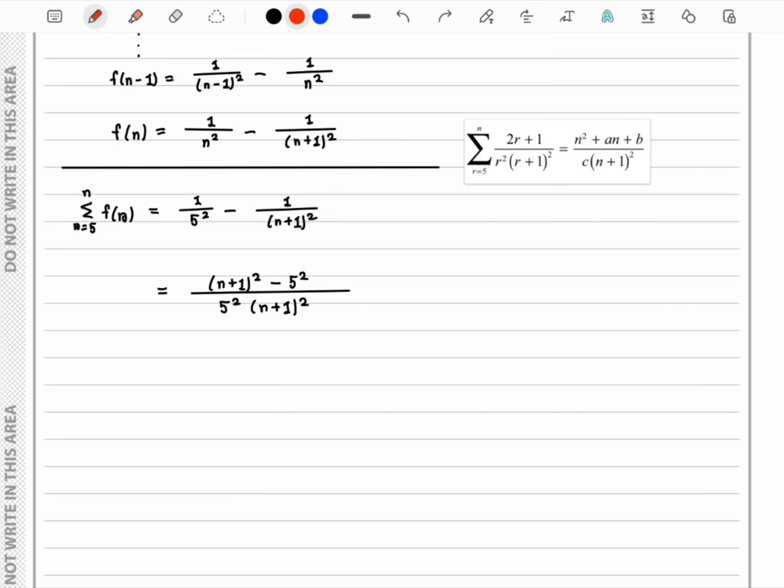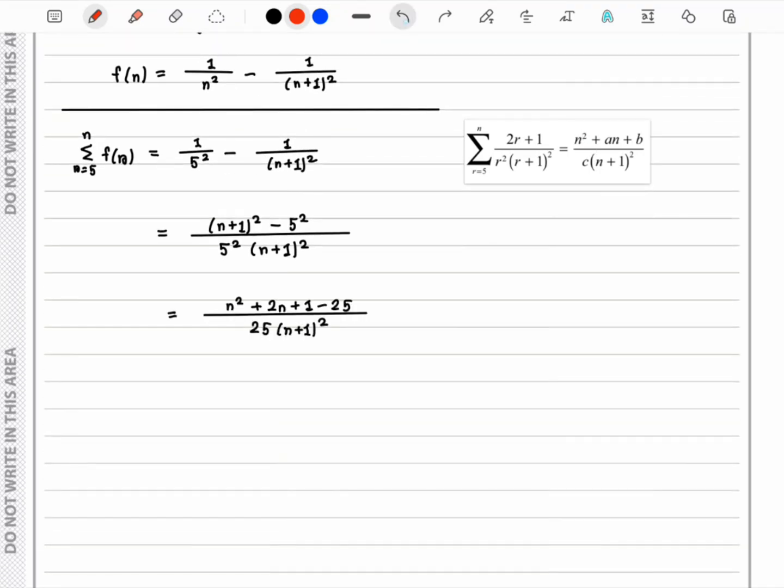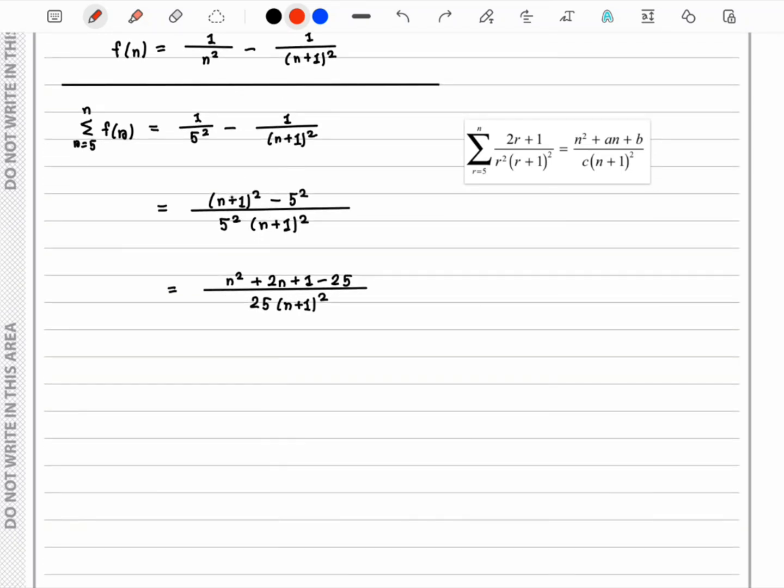We expand (n+1)², which is n² plus 2n plus 1, and then we have minus 5², minus 25. The denominator is 5²(n+1)², which is 25(n+1)². We can write down the answer in the next line, which is this.